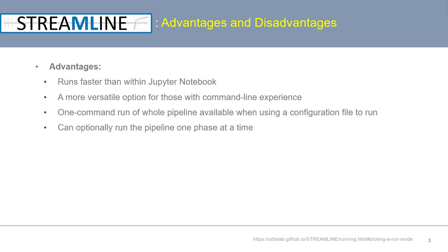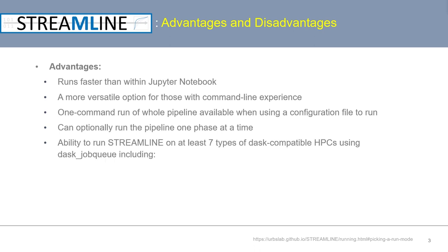You also have the option to easily run the pipeline one phase at a time, as well as the ability to run Streamline on at least seven types of DASK-compatible HPCs using DASK Job Queue, including LSF, SLURM, PBS, OR, MOAB, SGE, and HT Condor.